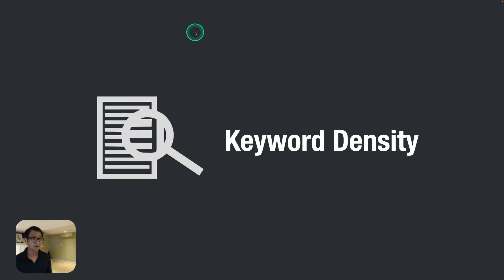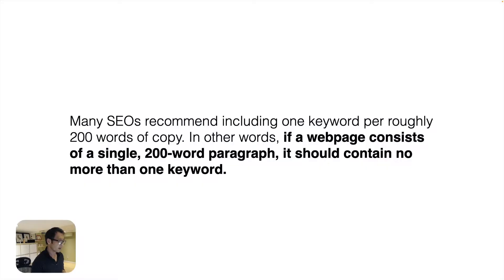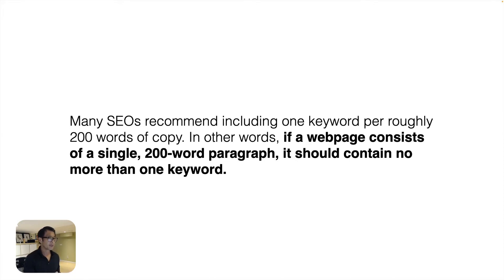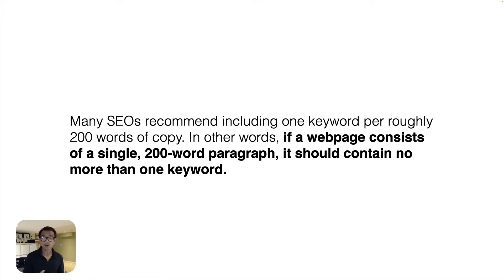Next is keyword density. Many SEOs recommend including one keyword per roughly 200 words of copy — in other words, if a page has a 200-word paragraph, it should contain no more than one keyword. There's no hard set-in-stone rule, but this gives you a rough idea.